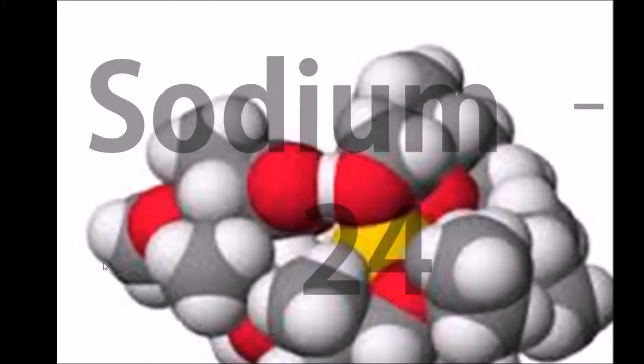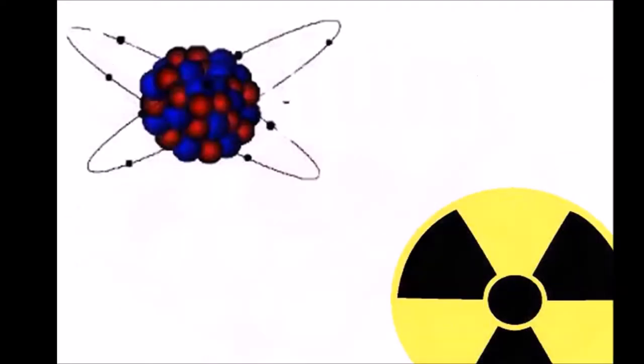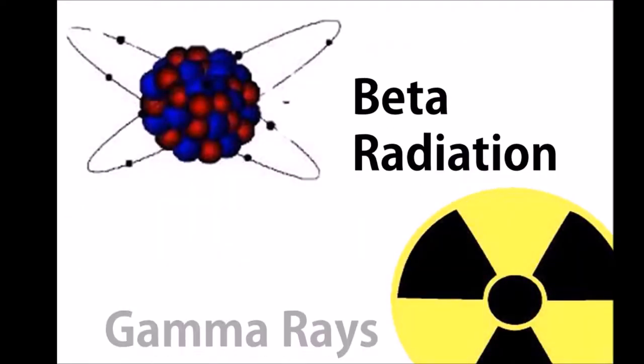A common radioisotope in industry, sodium-24, can produce both beta radiation and gamma rays.